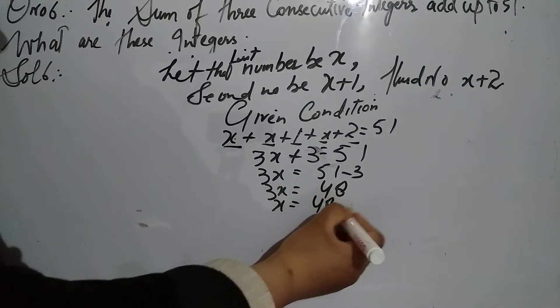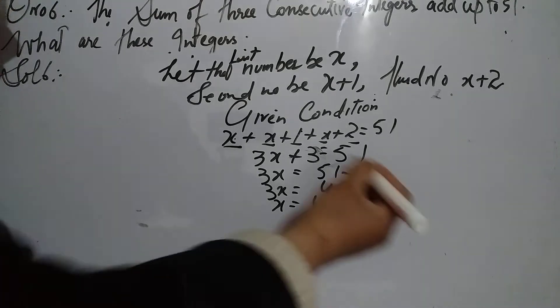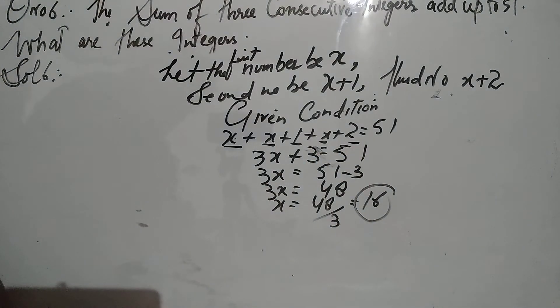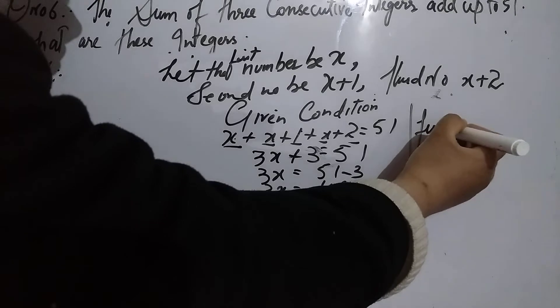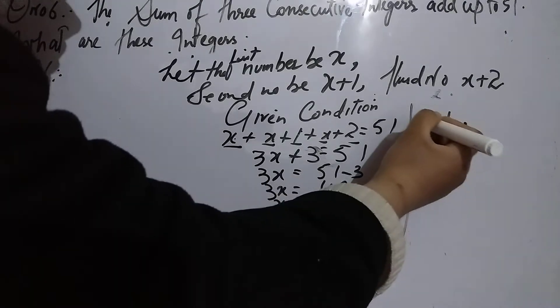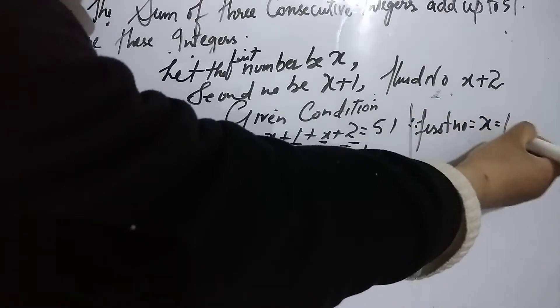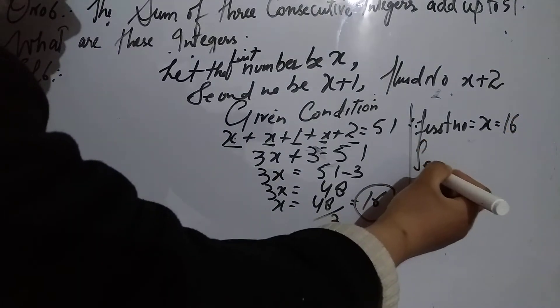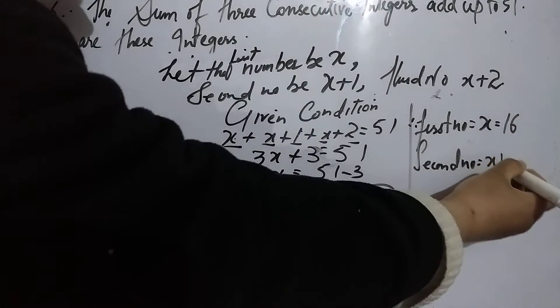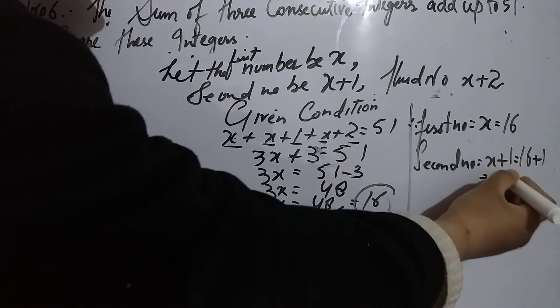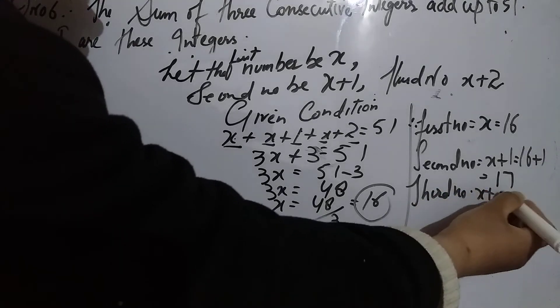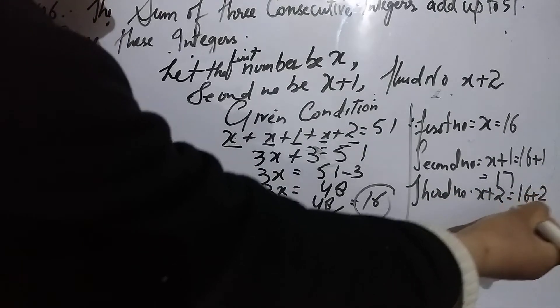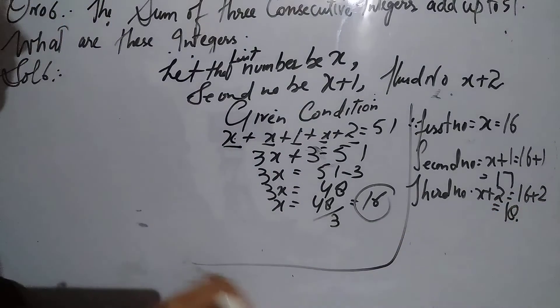x will be equal to 48 by 3, then x will be equal to 16. Therefore, our first number is x, that is 16. Second number is x plus 1, that is 16 plus 1, that is 17. Third number is x plus 2, that is 16 plus 2, that is 18.